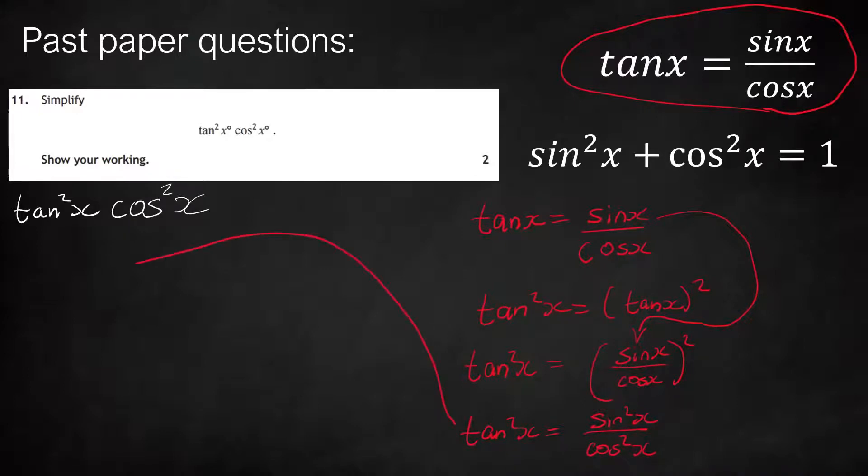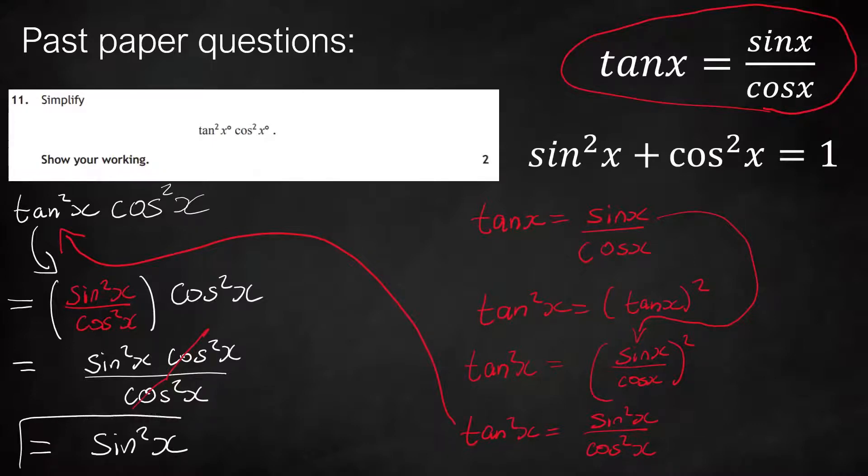We're going to take this and put it into the equation that we're given at the start. We're going to substitute in tan squared, so we replace it with sine squared over cos squared, and we've still got the cos squared from before. We'll write it all as one fraction now. We notice there's a cos squared on top and bottom, so we can cancel them off because cos squared divided by cos squared is one. That leaves us with just sine squared, which is the answer.